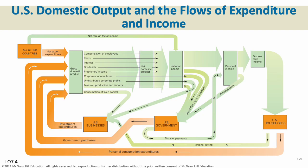Just like we had a circular flow in previous chapters, it works for GDP as well. We can look at the income approach or the consumption approach — they always equal the exact same thing. Even when we account for more transactions in the economy, income and expenditures are always going to be equal in a GDP sense.